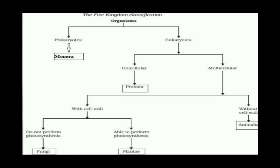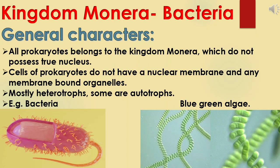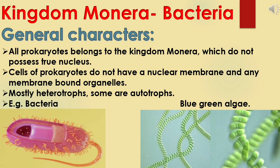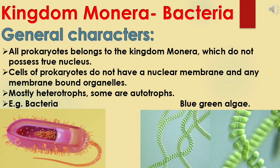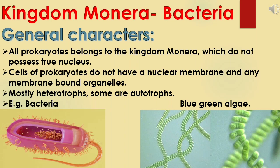The first kingdom is Kingdom Monera. The members are bacteria. The word 'Monera' is derived from ancient Greek meaning 'single.' All prokaryotes belonging to Kingdom Monera do not possess a true nucleus — the nucleus is not surrounded by nuclear membrane. The genetic material called nucleoid is present in the cytoplasm, and other membrane-bound cell organelles are also absent. Most bacteria are heterotrophic, depending on other organisms for food. Some bacteria are autotrophic — they can produce their own food. Examples: bacteria and blue-green algae.